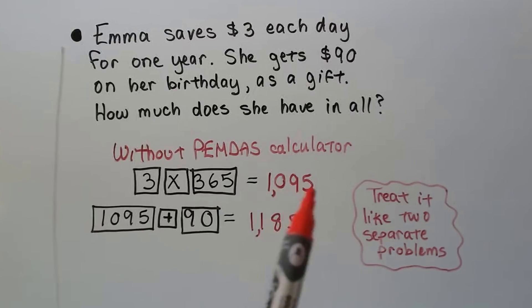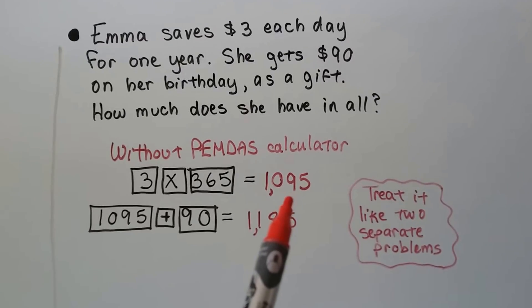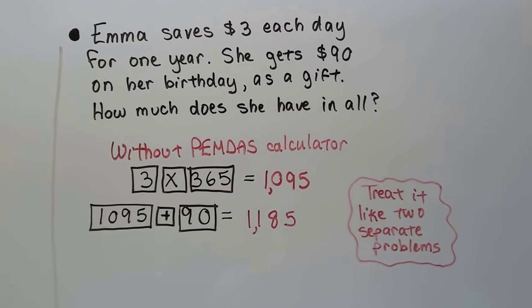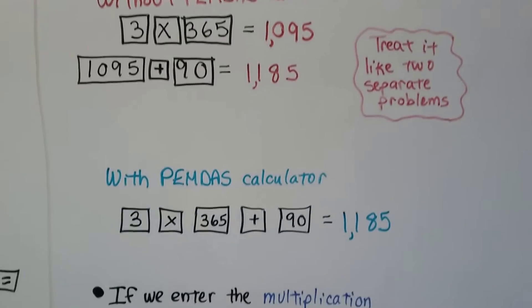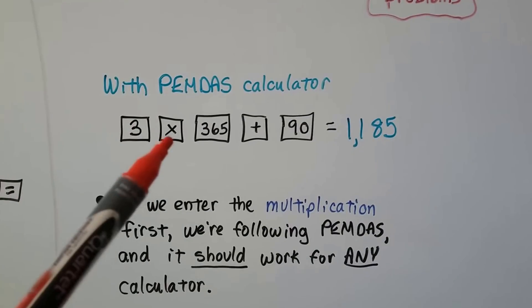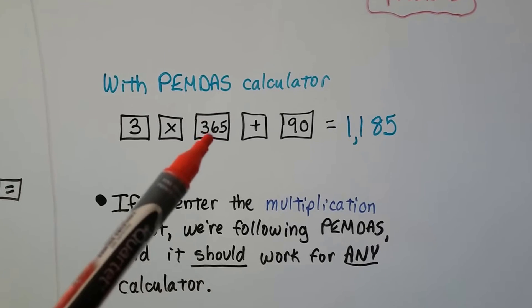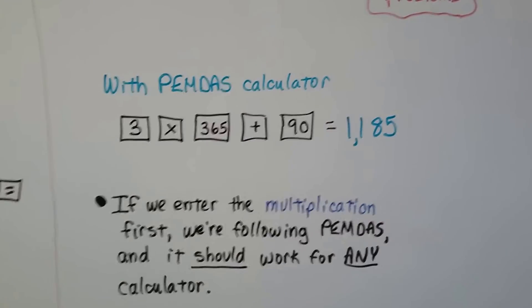Now, you might also just be able to have the 1095 come up on the calculator screen and hit plus 90 equals. Depends on what kind of calculator you're dealing with. If it is a PEMDAS calculator, you're going to be able to actually put in 3, the multiplication key, 365, the plus key, 90, and equals, and you should get the answer.